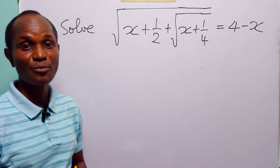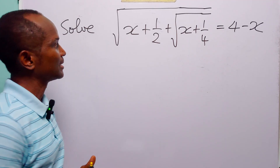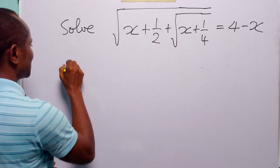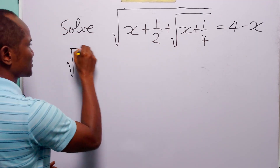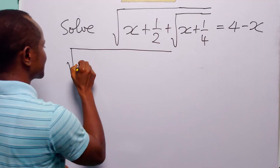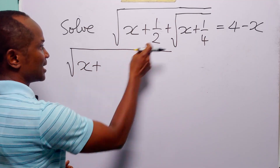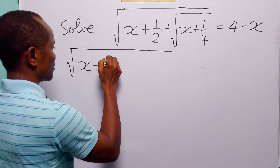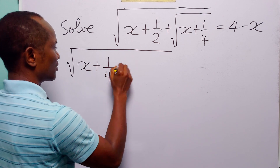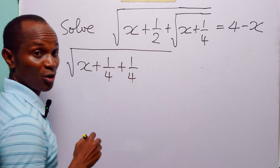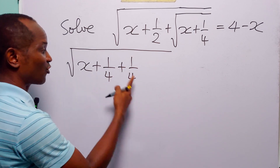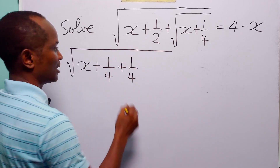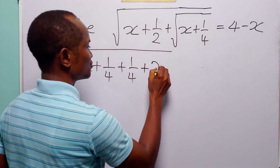Now let us look at the left-hand side of this equation. We have the square root of x, plus we are going to write one-half as 1/4 plus 1/4. Of course you know that 1/4 plus 1/4 is equal to one-half, and then you have plus 2 times one-half times the square root of x plus 1/4.